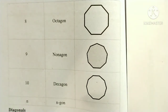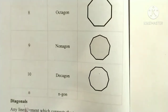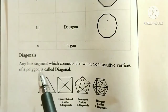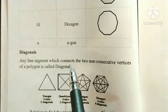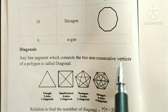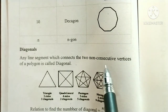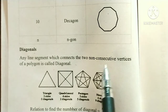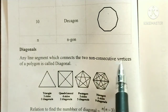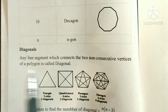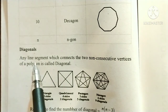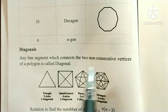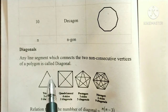Next point, we will go to diagonals. Any line segment which connects the two non-consecutive vertices of a polygon is called a diagonal.